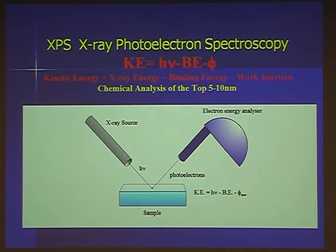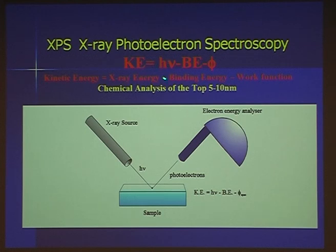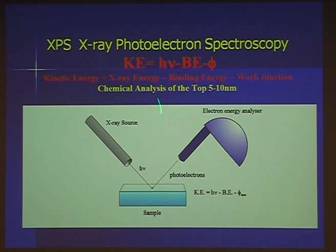Let's see how it works — a very basic process. You have an X-ray source providing the photons; they bombard the surface and knock out what we call the photoelectrons. These go up into an electron energy analyzer, and the kinetic energy of these electrons is equal to the input energy minus their binding energy. The electrons only escape from about 5 or 10 nanometers. So it's very simple: an X-ray source, a sample, and an electron energy analyzer.